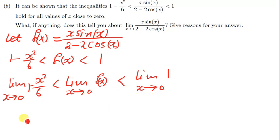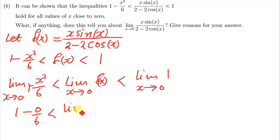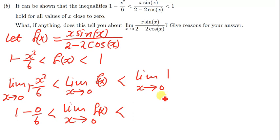For the first one, replacing x with zero gives us 1 minus 0 over 6, which equals 1. We leave the middle term as the limit of f(x) as x approaches zero. The limit of a constant as x approaches any number is simply that same constant, so the right side is also 1.